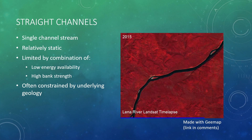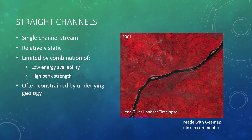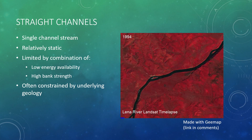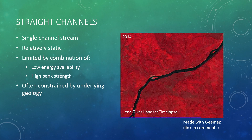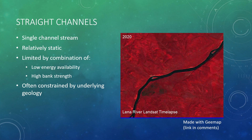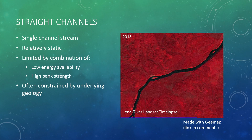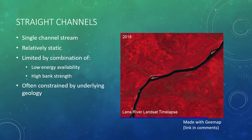The GIF on the right is of the Lina River in Russia, a naturally straight channel. We can see over the time lapse that the position of this channel is virtually unchanged over the entire 25-year lapse of imagery. Now there are some islands moving around in there, but more or less this is a static stream.